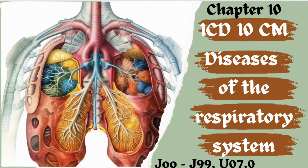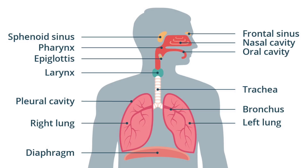In today's video, we'll be covering chapter 10 — diseases of the respiratory system, that is J00 to J99 series and also U07.0. The respiratory system starts from the nose and ends in the lung. You should have an idea about the anatomy of a system before learning everything. This applies to the CPT guidelines as well as the ICD-10-CM guidelines. All medical coders should be aware of basic anatomy and pathophysiology.